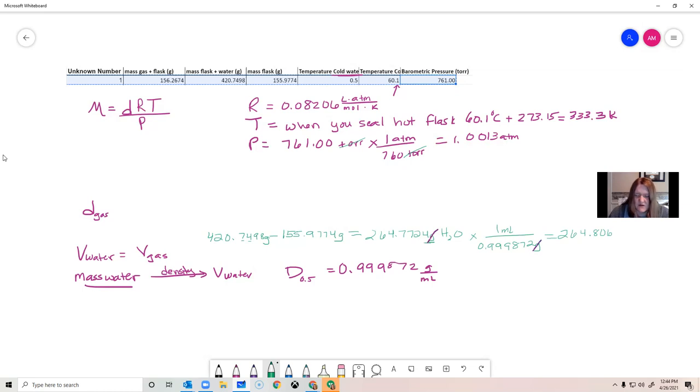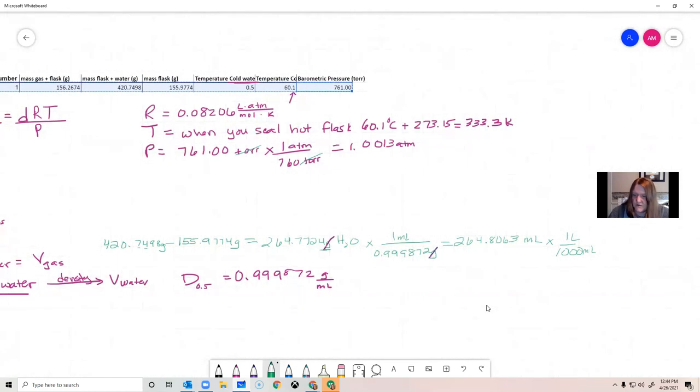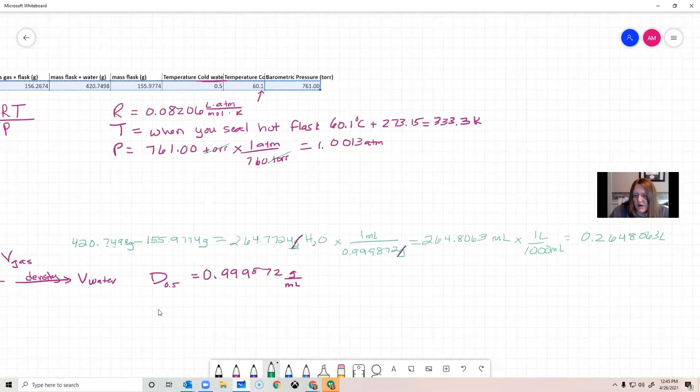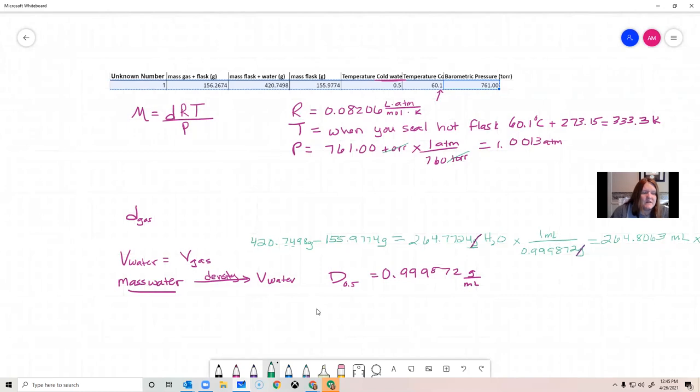Now our grams is going to cancel out and we end up with milliliters, right? So I'm actually dividing by 0.999872 and it doesn't change it dramatically, but you're going to find when you do these calculations that small changes in these numbers make a really big difference. So don't skip this step. My calculator says 265.106295. So that's the volume of the gas. I also need to convert it into liters because we don't typically do density of gases in milliliters. It's too small. And I want to show the dimensional analysis for that as well.